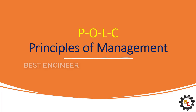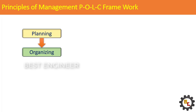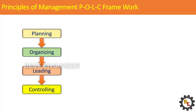Let us discuss POLC cycle and principles of management. POLC represents the steps carried out in every organization to achieve the goals. P represents planning, O represents organizing, L represents leading, and C represents controlling.